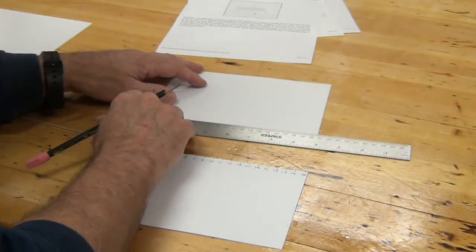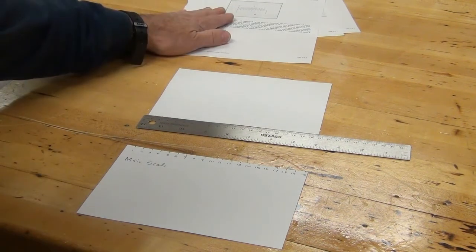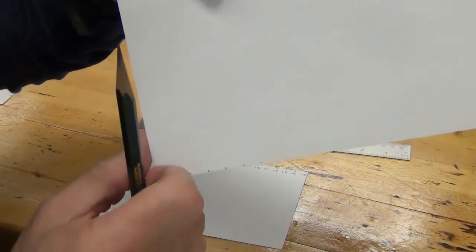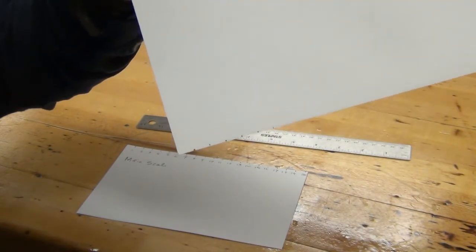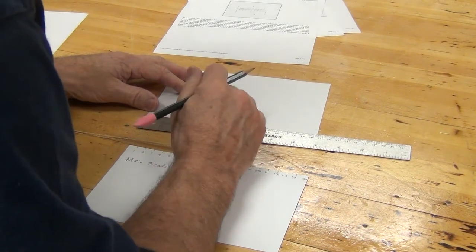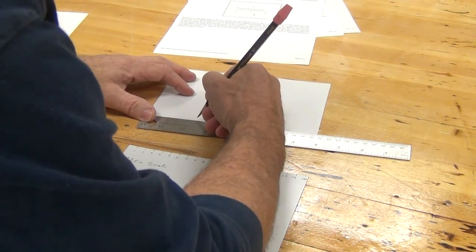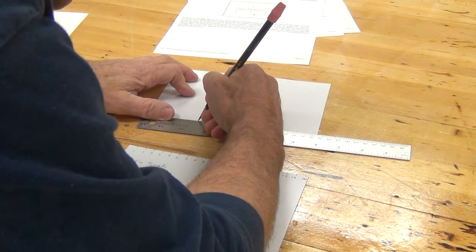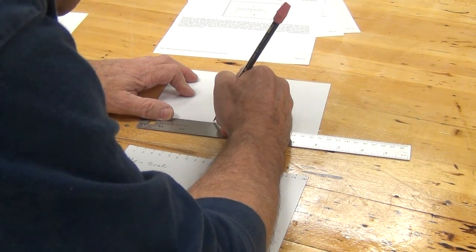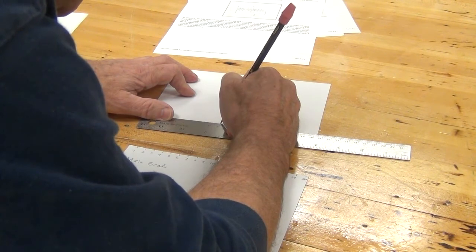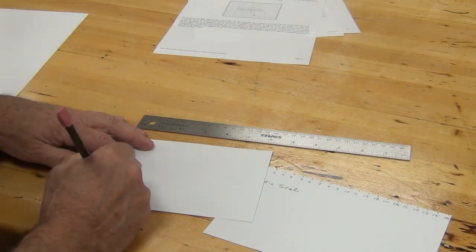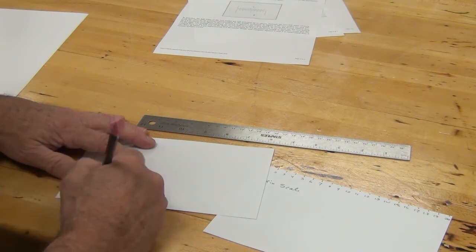Okay so here I've got my whole centimeters remember that in this example the edge of the card is going to be the zero mark and I'm going to number these. This would be considered the main scale. Okay and I'm going to write that here main scale.